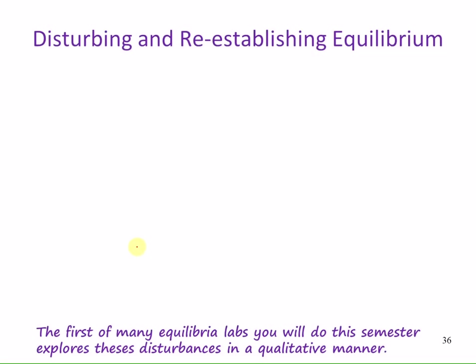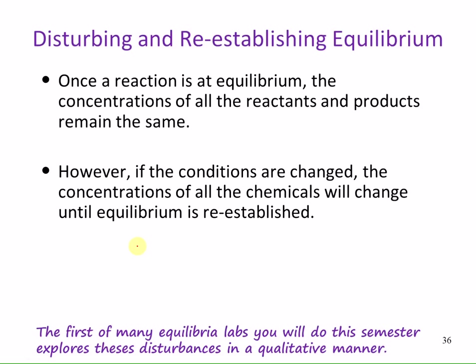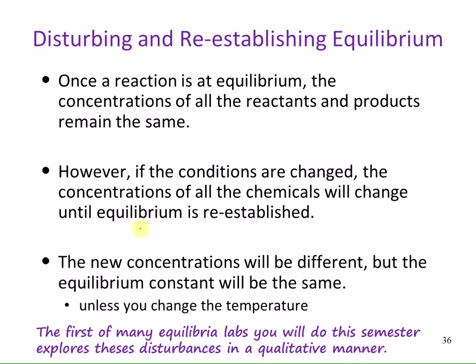For the last part of the chapter, we'll be looking at disturbing and reestablishing equilibria. Once a reaction is at equilibrium, the concentrations of all the reactants and products remain the same. However, if the conditions are changed, the concentrations of all the chemicals will change until equilibrium is reestablished. The new concentrations will be different, but the equilibrium constant will be the same — unless you change the temperature, because the equilibrium constants are dependent upon the temperature.